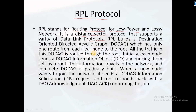RPL builds a Destination Oriented Directed Acyclic Graph, known as DODAG. In this structure, there is one root node, and there are multiple nodes connected to it forming a graph. The DODAG has one root, and from that root, leaf nodes are formed throughout the network.